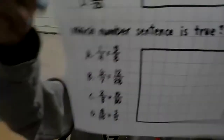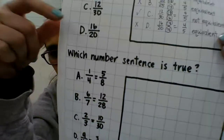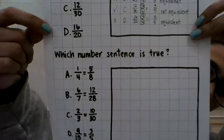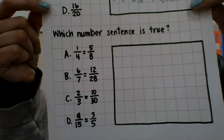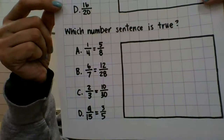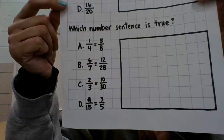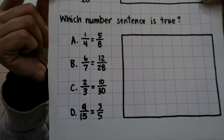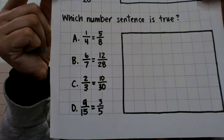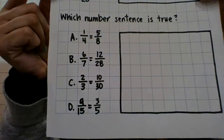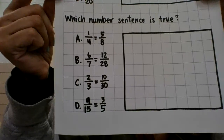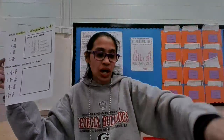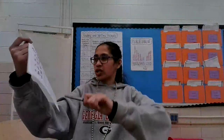Which number sentence is true? A: one-fourth equals five-eighths. B: six-sevenths equals twelve twenty-eighths. C: two-thirds equals ten-thirtieths. And D: nine-fifteenths equals three-fifths. All right, so have your pencil — I'm going to use a marker so you all can see it better.